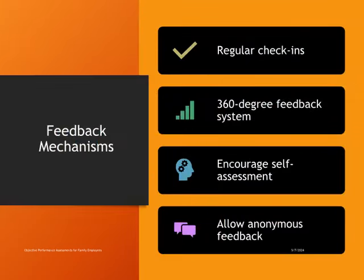Constructive feedback is a vital component of performance reviews. Establish effective feedback mechanisms to facilitate this process. Schedule regular check-in meetings throughout the year to provide ongoing feedback and address performance-related issues as they arise. Consider implementing a 360-degree feedback system that gathers input from peers, subordinates, and supervisors to provide a comprehensive view of performance. Encourage family members to self-assess and reflect on their performance, as this self-awareness can lead to valuable insights and improvements. Allow for anonymous feedback from employees who may be reluctant to provide open feedback due to family dynamics.